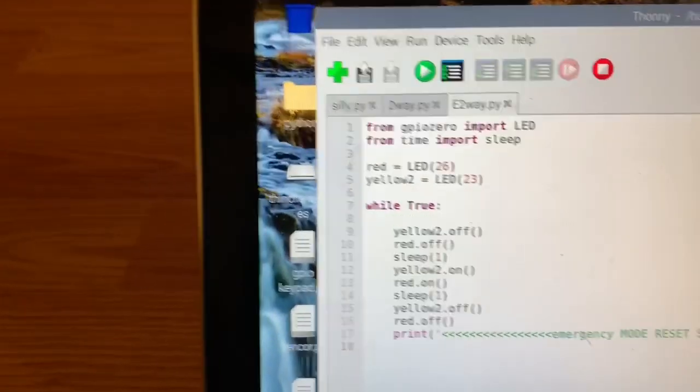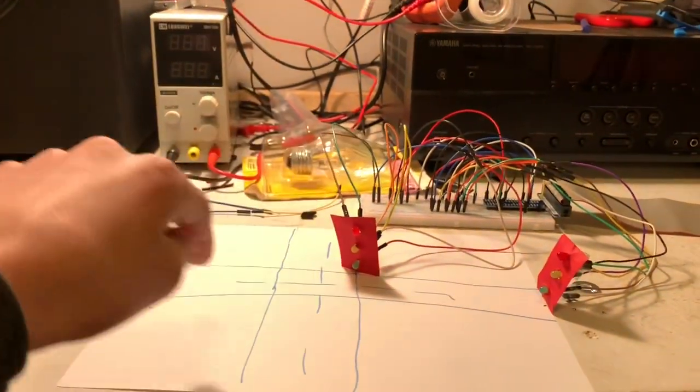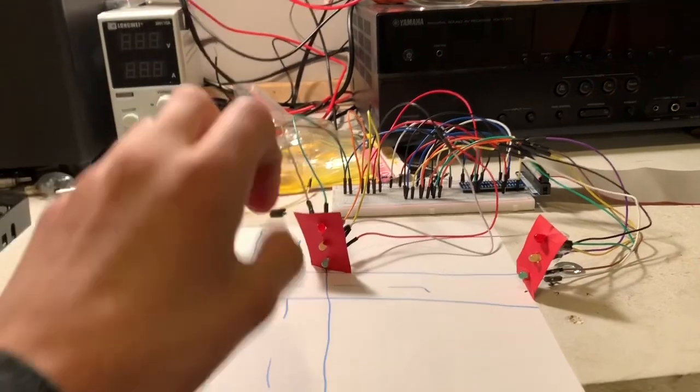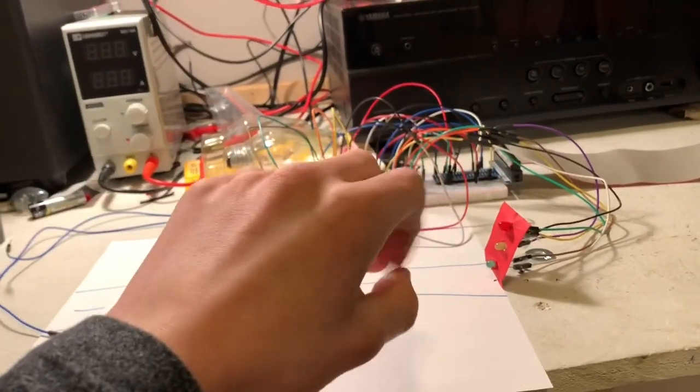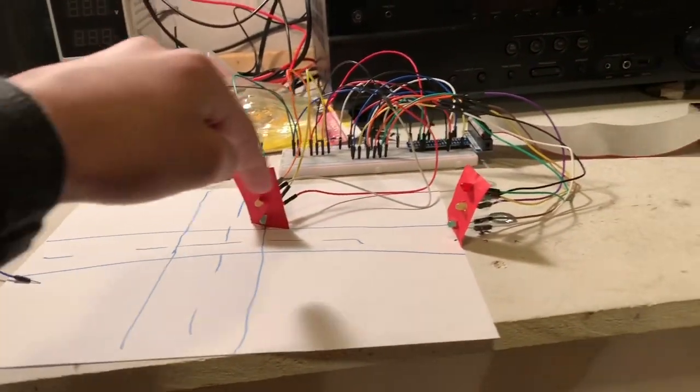Basically what this one does is it's a very short script which will make this red one blink because this road has the right of way. So this road will need to stop. So the red one will blink and the yellow one will blink here so that the people know to slow down.